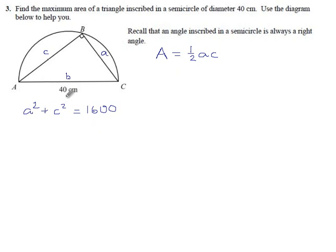Well, buckle up, this isn't as nice a substitution as we've been getting before. If I solve this for c, let's say take a squared to the other side, I get c squared equals 1600 minus a squared, and then square root, c is root 1600 minus a squared.